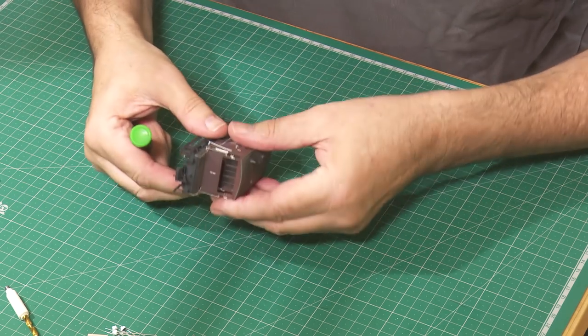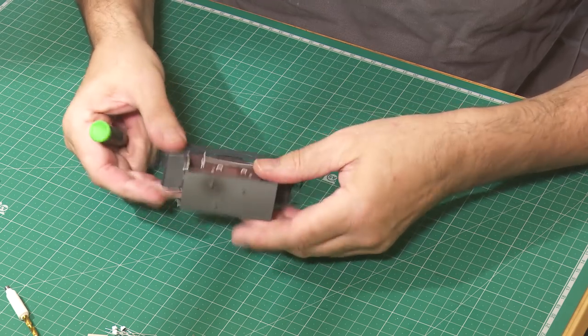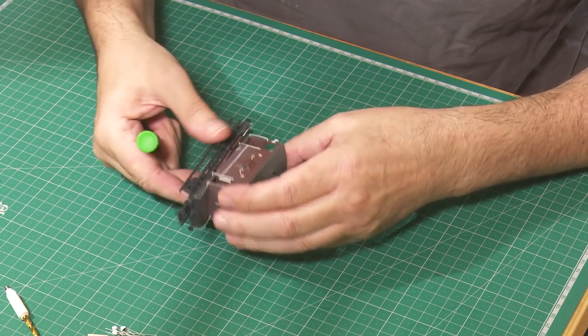The body can now be separated from the chassis with the aid of a small flat-bladed screwdriver.